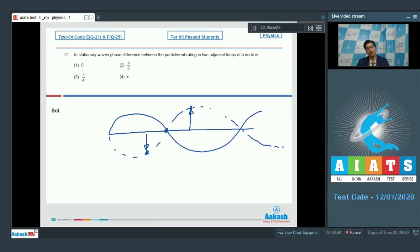The phase difference between these particles is pi and hence, for question number 21, the correct answer is 4. Now let us discuss question number 22.